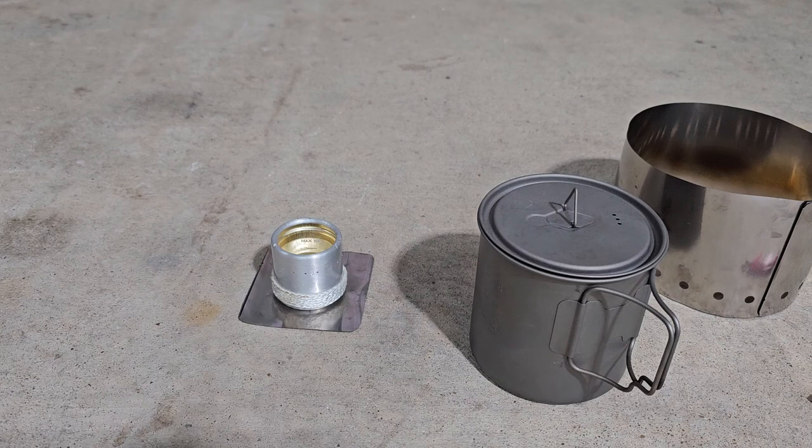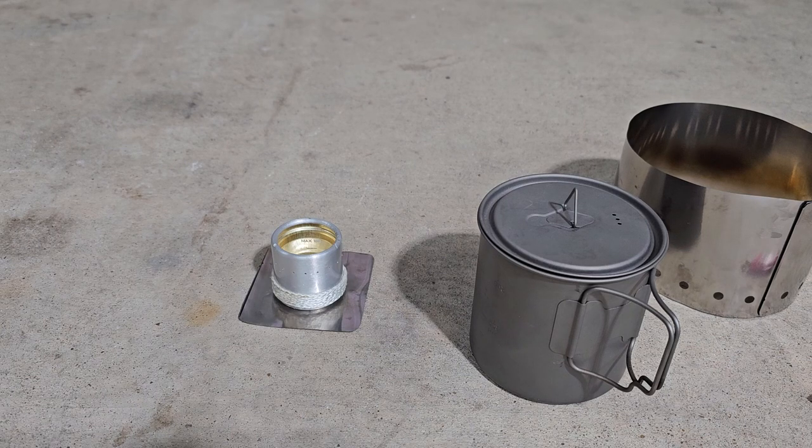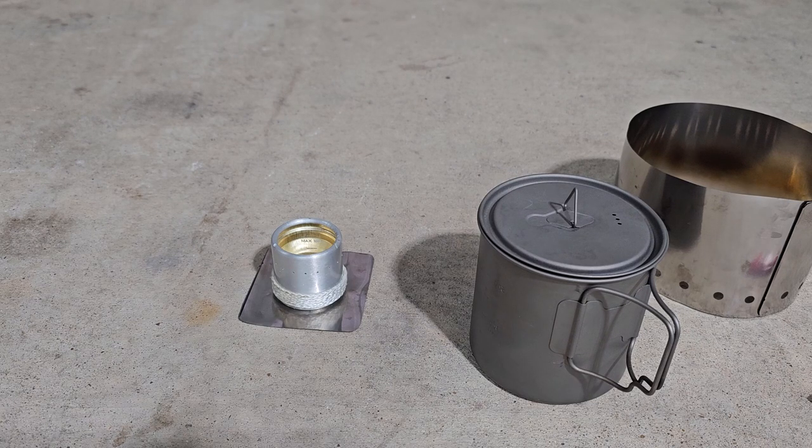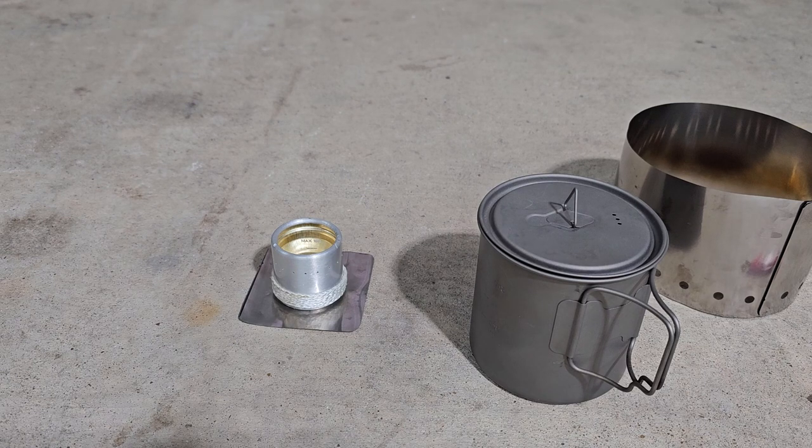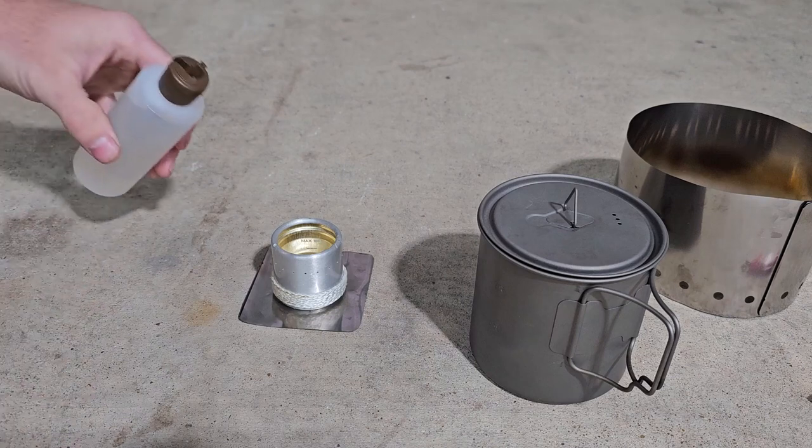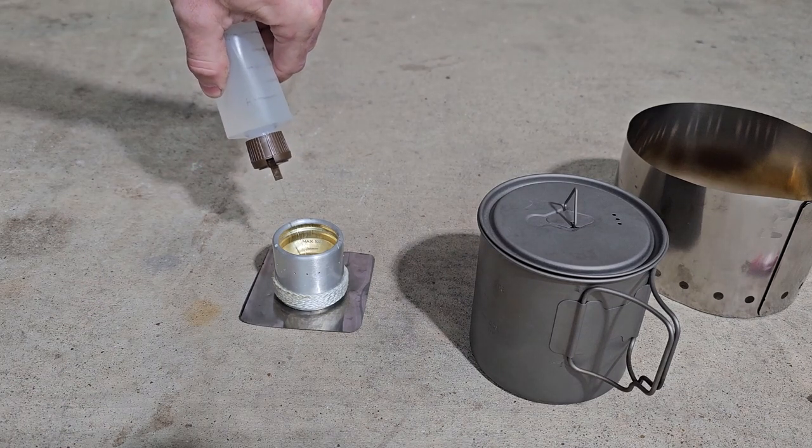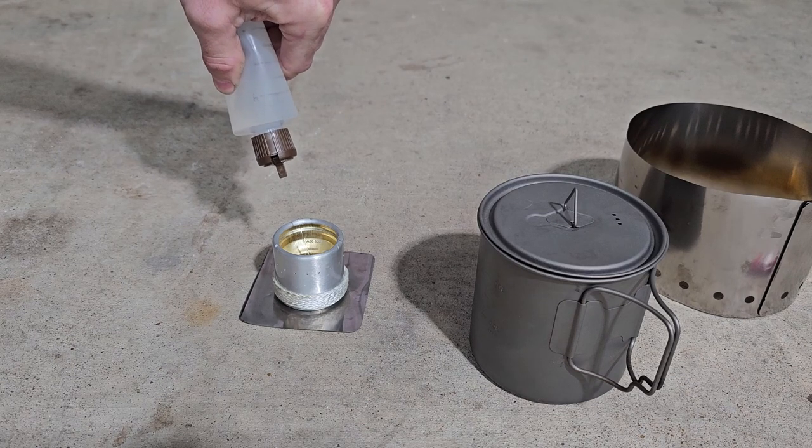Alright, so we're going to start our boil test. My water I'm starting with is 12 ounces which is typical of what I would boil at one time, and it's starting out around 60 degrees which is most of the time probably pretty typical of the water temperature in my area. So now I'm going to take and put one ounce of fuel into my stove here.